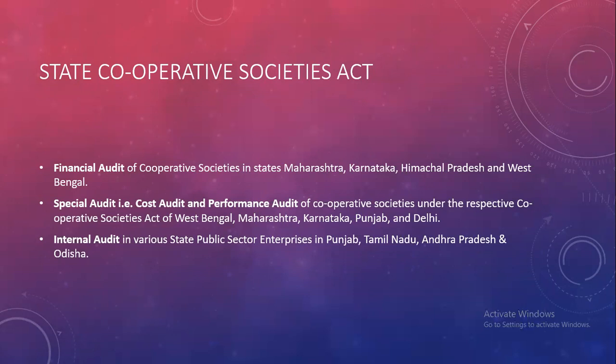This point is my favorite — the State Cooperative Society Act. Various state governments allow financial accounts, profit and loss, and balance sheet audit. You can do that — you can audit, which is a very good thing, because we think that financial accounts audit is not available, but somewhere here we have rights where we can audit. This includes special audit like cost audit and performance audit of cooperative societies under respective cooperative society acts of West Bengal, Maharashtra, Punjab, Delhi, and this will increase.